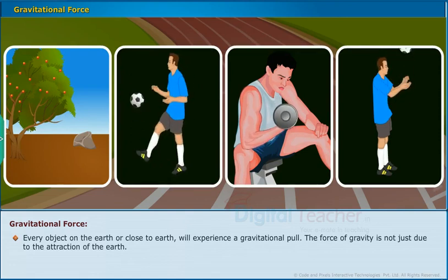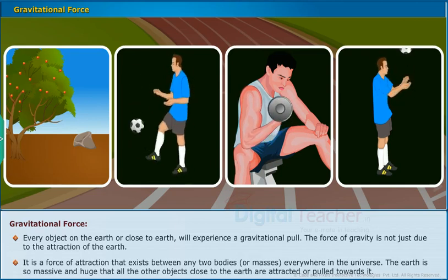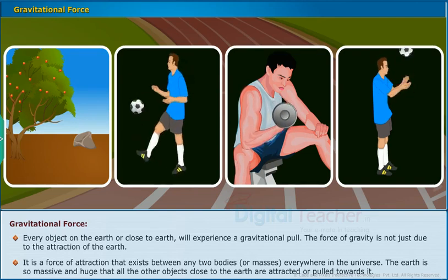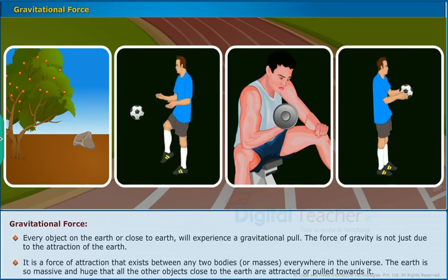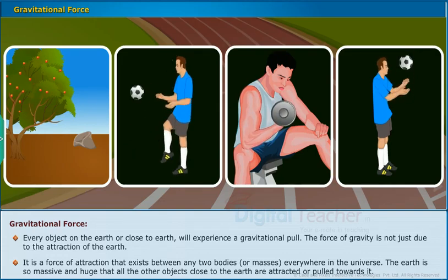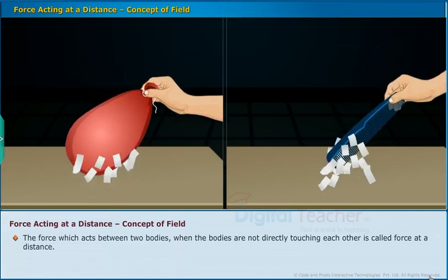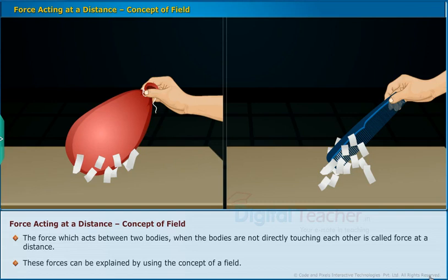Every object on the earth or close to earth will experience a gravitational pull. The force of gravity is not just due to the attraction of the earth — it is a force of attraction that exists between any two bodies or masses everywhere in the universe. The earth is so massive and huge that all other objects close to the earth are attracted or pulled towards it. The force which acts between two bodies when the bodies are not directly touching each other is called force at a distance. These forces can be explained by using the concept of a field.